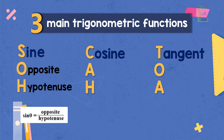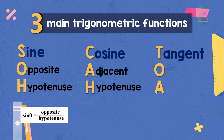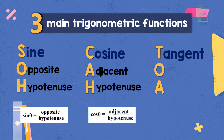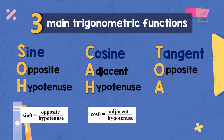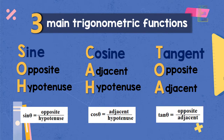For the expression CAH, C stands for cosine, A stands for adjacent, and H stands for hypotenuse. Therefore, cosine is equal to adjacent over hypotenuse. And for the expression TOA, T stands for tangent, O stands for opposite, and A stands for adjacent. Therefore, tangent is equal to opposite over adjacent.